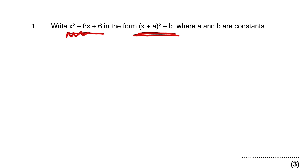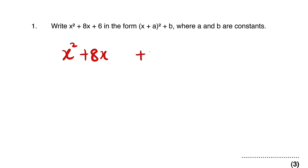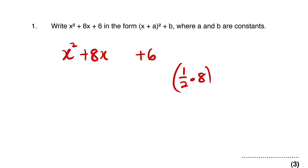We consider the function x squared plus 8x plus 6. We write x squared plus 8x, leave a space, then plus 6. To make this a perfect square, we take half the coefficient of x, which is 8, then square it. Half of 8 is 4, and 4 squared is 16. Therefore we add 16 here, and since 16 was not there initially, we subtract it to compensate.